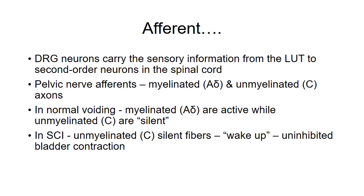These second-order neurons provide the basis for spinal reflexes and ascending pathways to higher brain regions involved in micturition, continence, and mediation of sensation. The pelvic nerve efferents are small myelinated A-delta and unmyelinated C axons. The myelinated A-delta fibers are needed only in normal voiding and respond in a graded fashion, whereas the unmyelinated C fibers are silent during normal voiding.